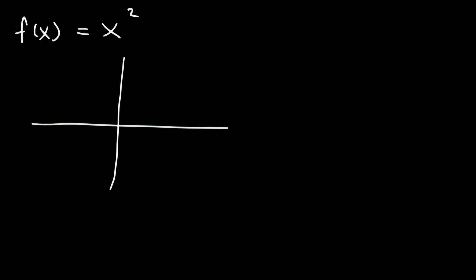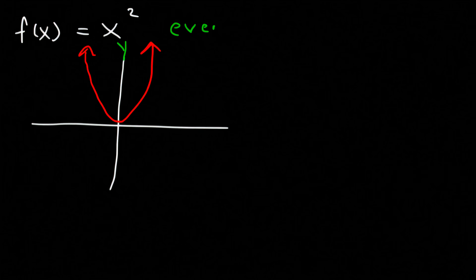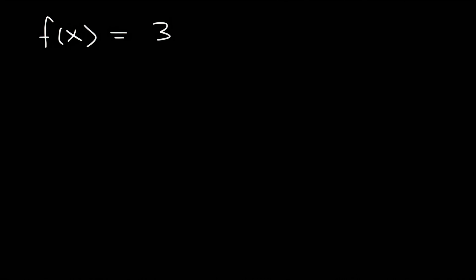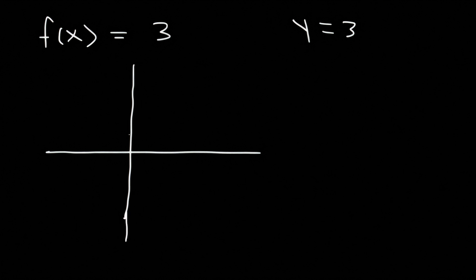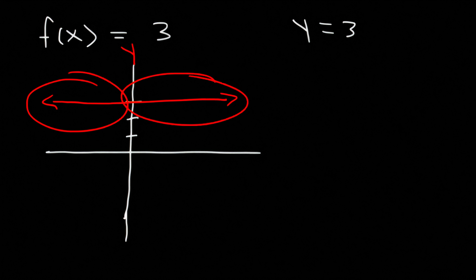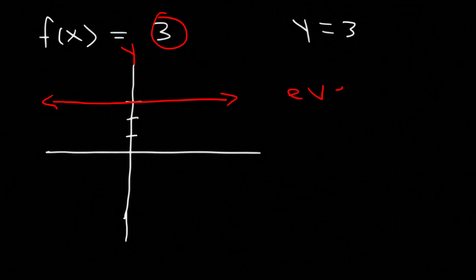Let's take a look at x squared. Because it has an even exponent, we know it's an even function. The graph of x squared looks like an upward u. Notice that there's symmetry about the y-axis, so that means it's an even function. Now if you have a constant, like 3, that's also an even function. If you plot y equals 3, it's a horizontal line at 3, and notice that this line is symmetric about the y-axis — the left side looks exactly the same as the right side. So a constant, by definition, has even properties.